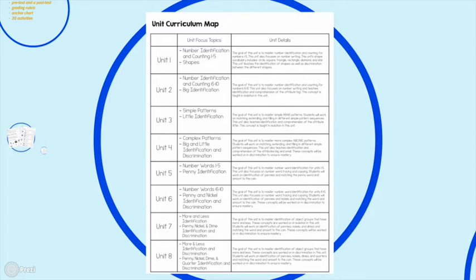Unit 2 works on identifying only items that are big. Unit 3 works on identifying only items that are little. And then in Unit 4, we make it more tricky by looking at big and little together, which is when a lot of our kids can really struggle with that discrimination option.